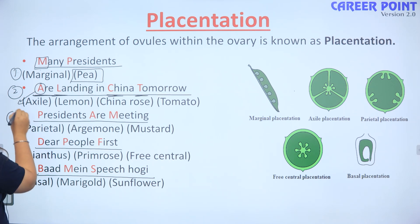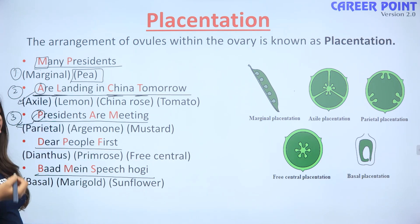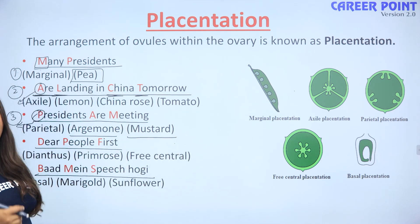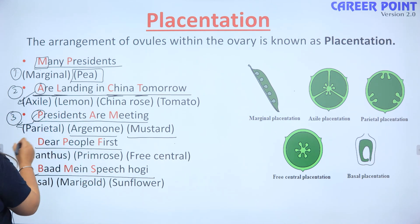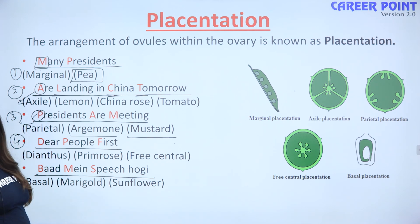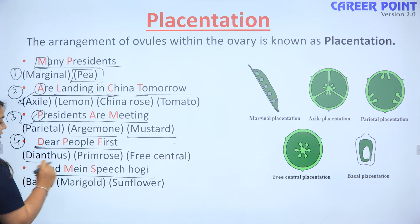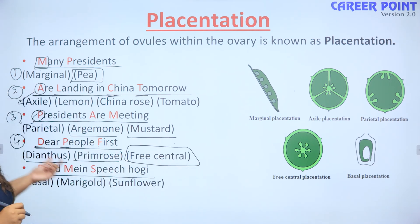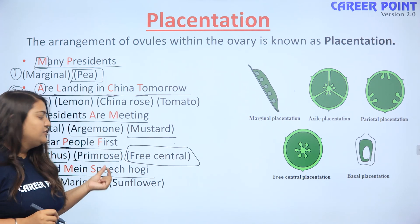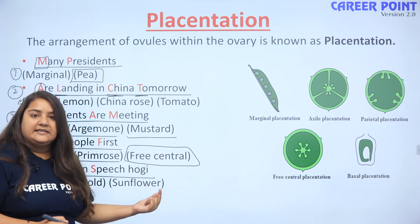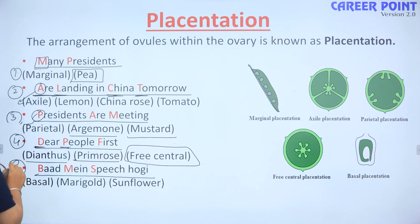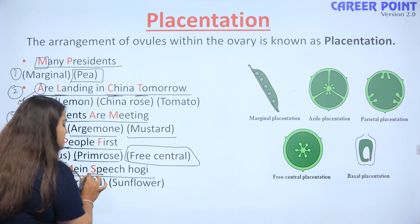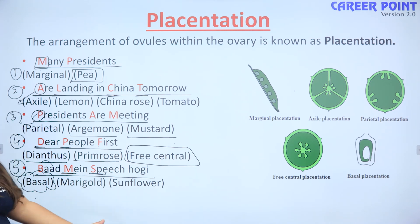Third type of placentation is parietal. Parietal ka example kya hai? Argemone or mustard. Fourth type of placentation is free central. Free central ke examples: Dianthus and primrose. D se Dianthus, P se primrose, F se free central. Last but not the least, basal type of placentation — basal ke examples: marigold and sunflower.